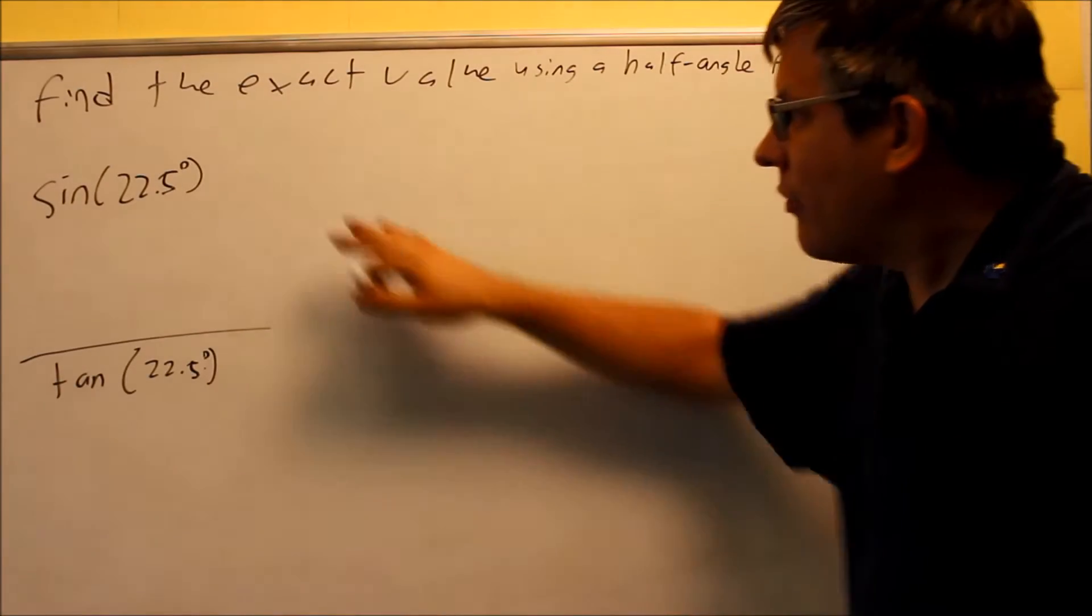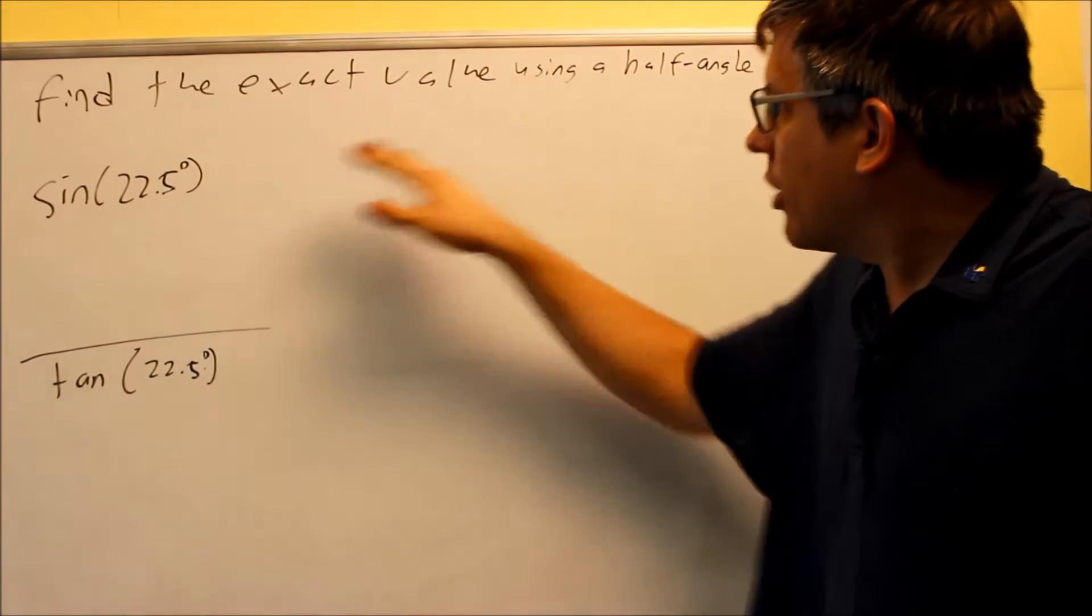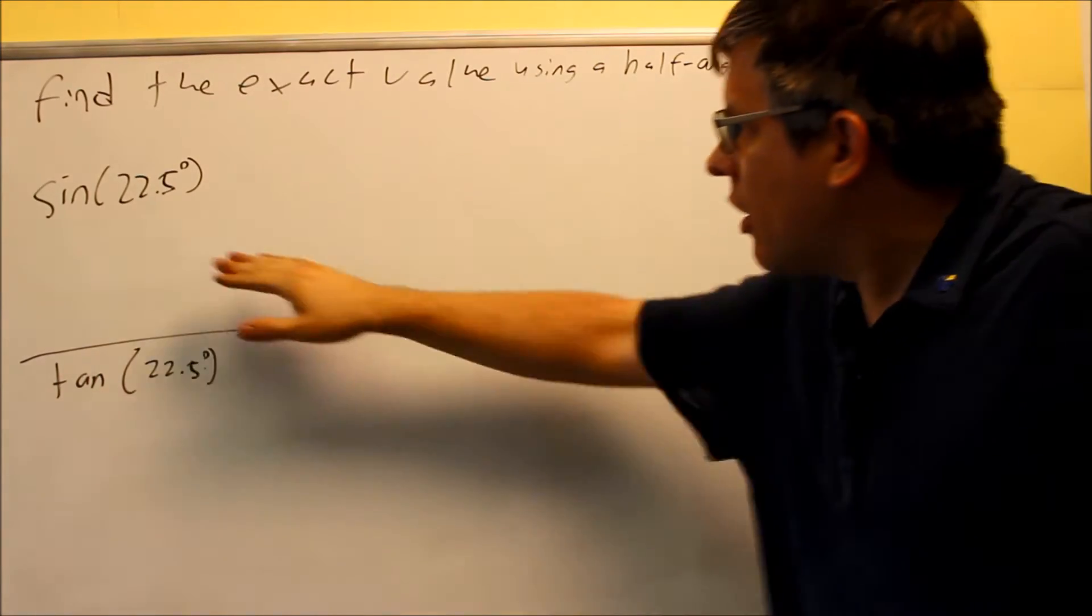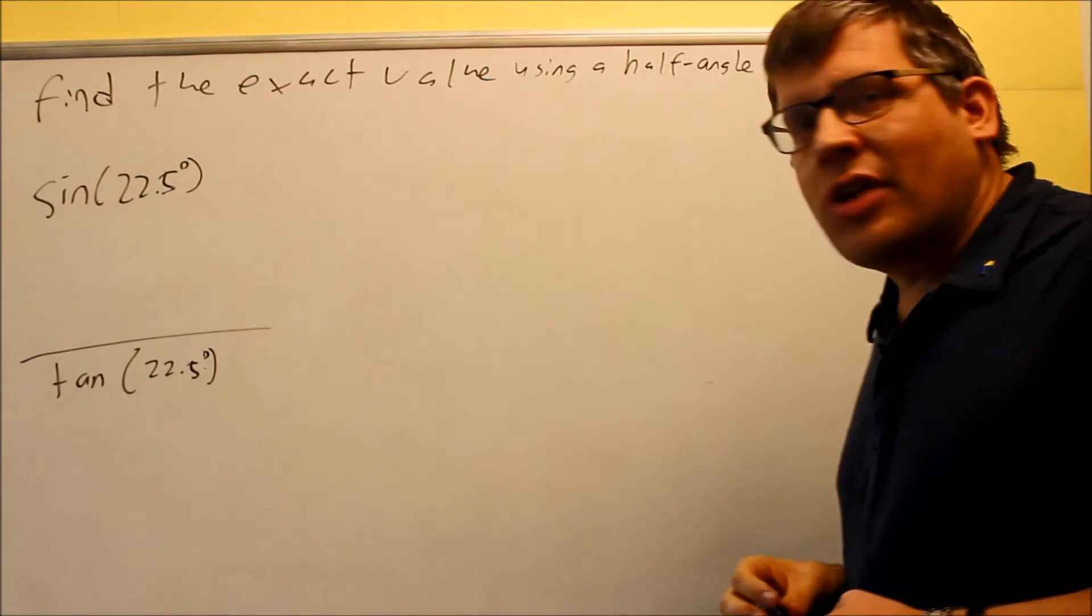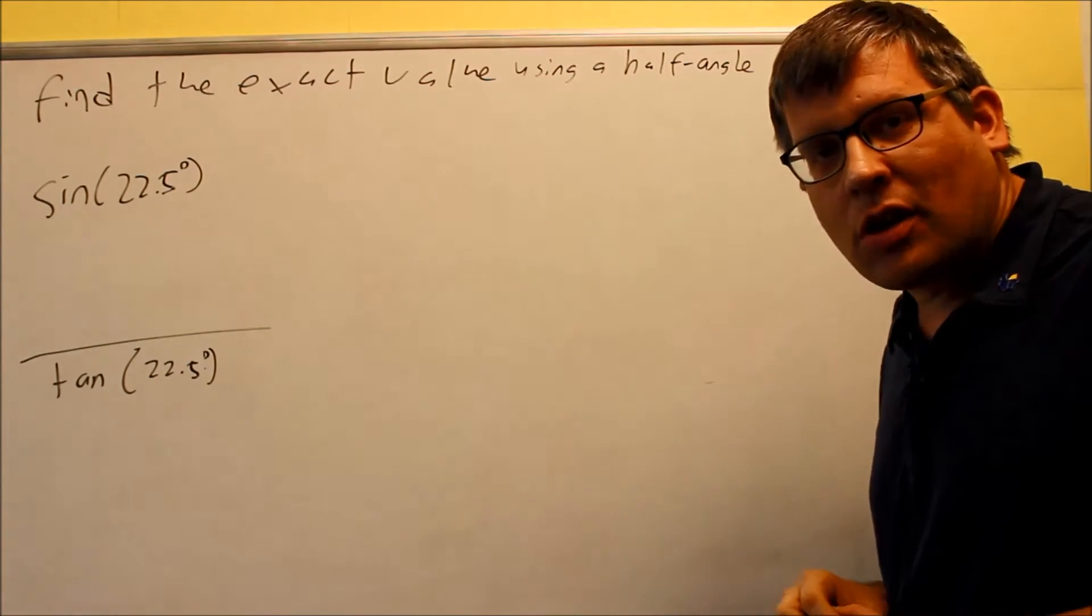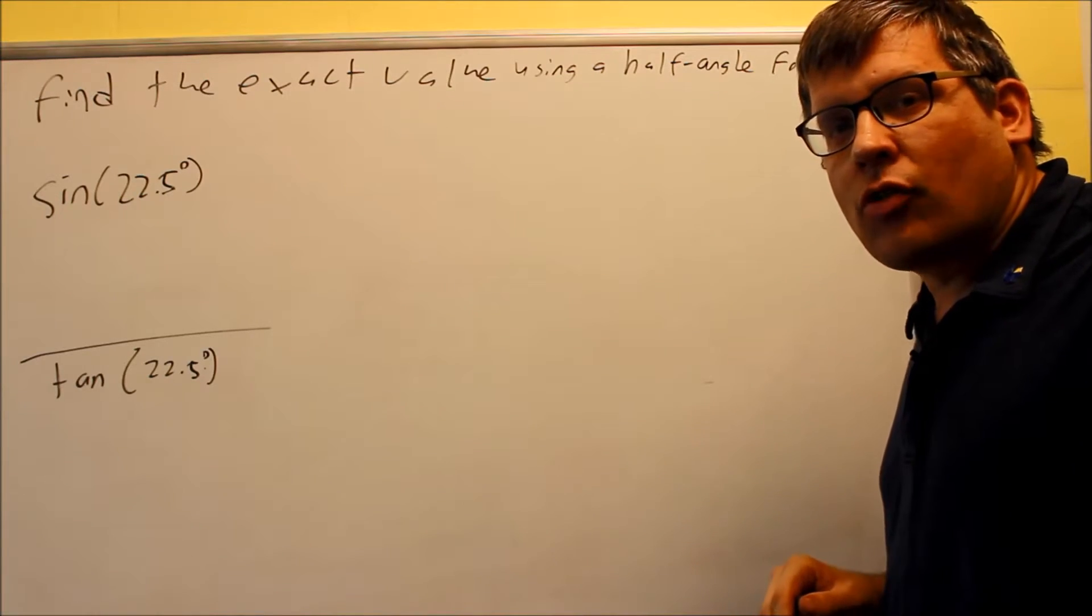Okay, we want to find the exact value of these two, and we have some decimals here. Now when we're looking at it, it may not look like we can apply a half-angle formula because it's not in a form that we're familiar with. So I want to change the decimal into a fraction because then that might allow me to better see how to use the half-angle formula.